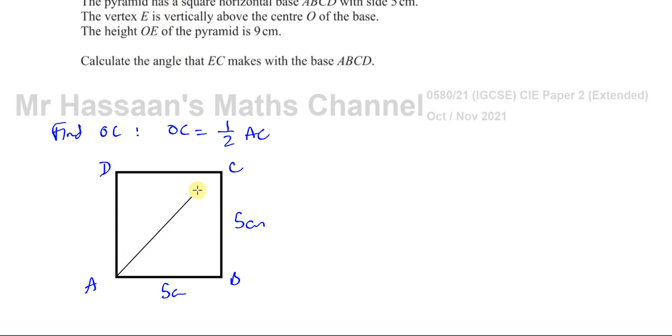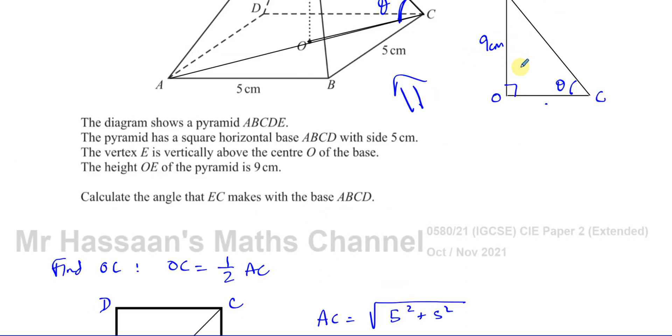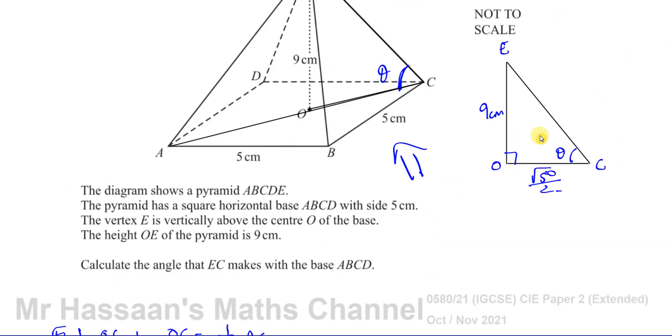So I can see, to find AC, I can use Pythagoras' theorem. This is a right angle triangle. So I can say AC is going to be the square root of the sum of the squares of the two shorter sides. So AC is going to be the square root of 25 plus 25, the square root of 50. I'll leave it like that for now. So now I know that this is going to be the square root of 50 over 2.